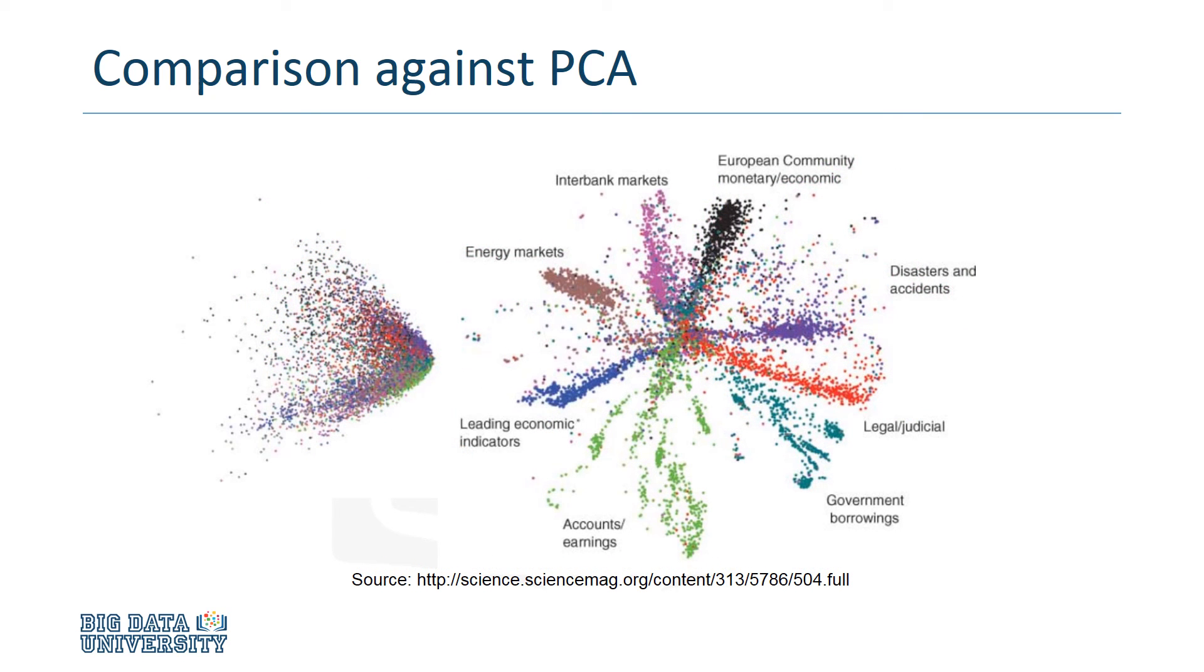Here is another comparison between PCA and an autoencoder, now applied to news stories. The separability of the autoencoder is far better than PCA in this case. Since separability is important for applying clustering algorithms, this difference in quality is significant.